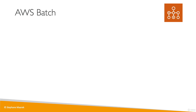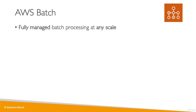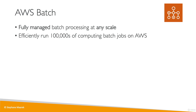Let's talk about a service that is named after what it does: AWS Batch. Batch is a fully managed batch processing service that can allow you to do batch processing at any scale. With the Batch service, you can efficiently run hundreds of thousands of computing batch jobs on AWS very easily.